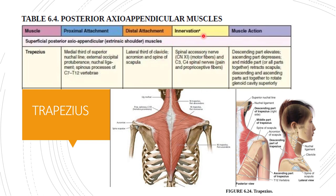The trapezius is supplied by cranial nerve XI (the spinal accessory nerve), which provides motor fibers, and by C3 and C4 spinal nerves, which provide pain and proprioceptive fibers. The descending fibers elevate the scapula, the ascending fibers depress the scapula and lower the shoulder, and the middle fibers retract the scapula. The descending and ascending fibers acting together rotate the glenoid cavity superiorly.